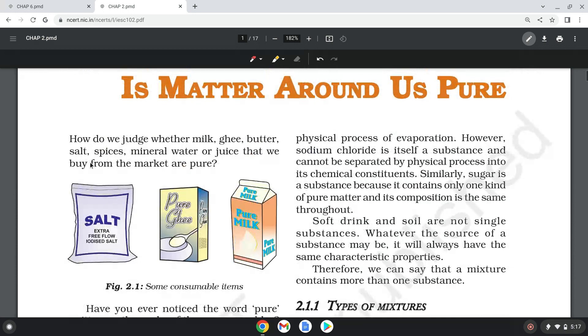By the physical process of evaporation, however, sodium chloride is itself a substance and cannot be separated by physical process into its chemical constituents. Sugar is a substance because it contains only one kind of pure matter, and its composition is the same throughout.